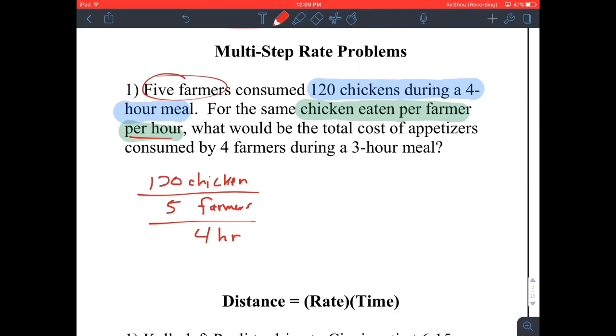The question asks what would be the total cost - it says total cost, it should say total chickens, typo, fire my secretary. So set this equal to what would be the total number of chickens, so we don't know what that is. Consumed by four farmers during a three-hour meal.